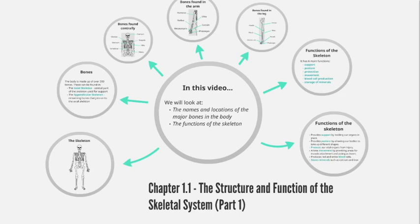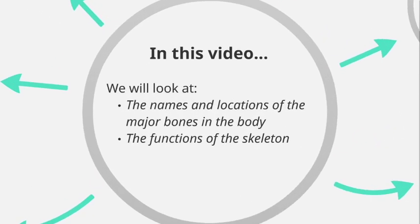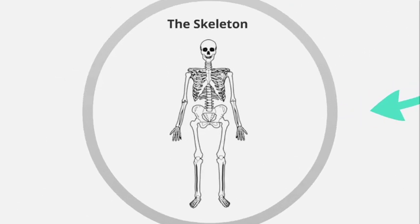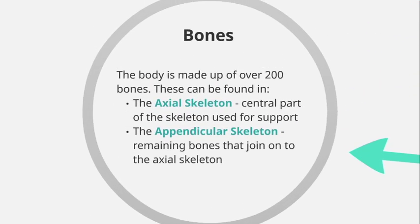Chapter 1.1: The Structure and Function of the Skeletal System. In this video we will look at the names and locations of the major bones in the body, and also the functions of the skeleton. We'll start by looking at a diagram of the skeleton. The human skeleton is made up of many different bones of different shapes and sizes. In fact, there are over 200 different bones in the human body. These can be found in the axial skeleton, which is the central part of the skeleton used mainly for support.